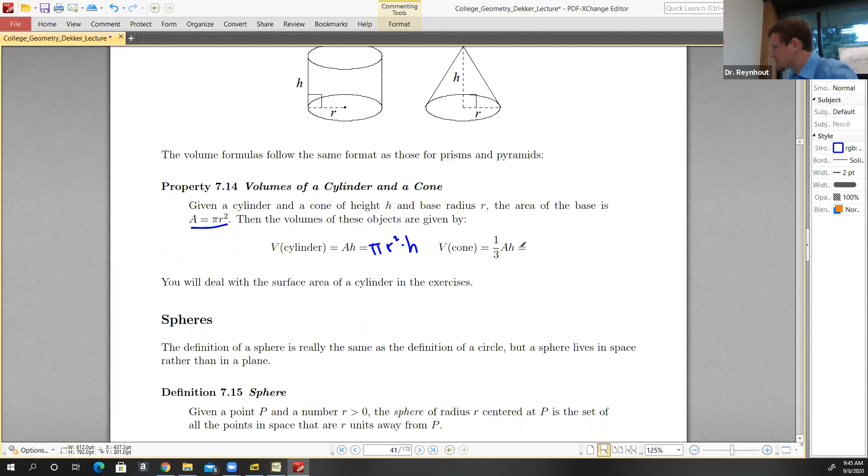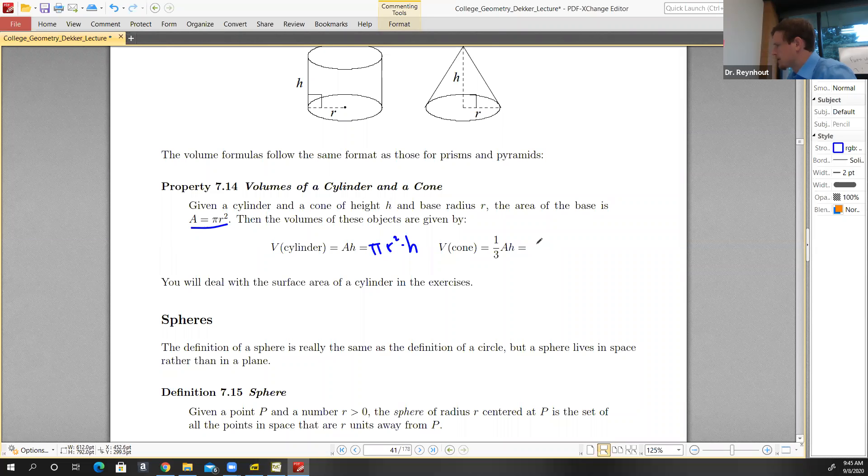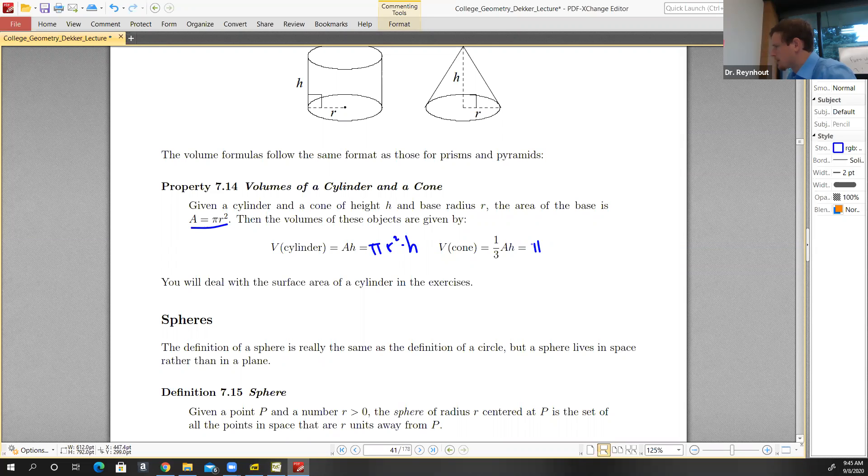And then for the cone, it's the same thing. The base is πr². This is the formula that we used in the previous section, the area of the base times the height, one third of that quantity. The base area is πr² times the height, and we wanted one third of that. So that's pretty straightforward.